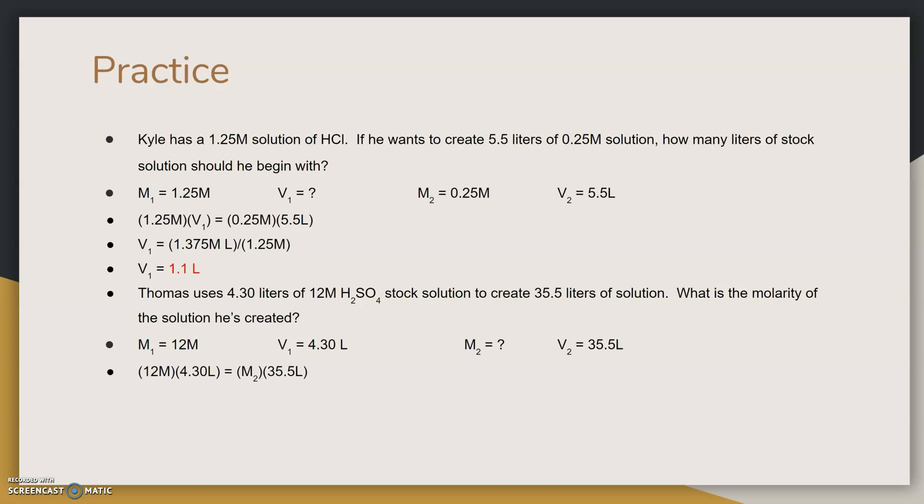We substitute each known value into our original equation. Now we isolate the variable. We also simplify. 12 molarity times 4.30 is 51.6. We isolate M2 by dividing both sides by 35.5 liters. Our answer becomes 1.45 molarity.